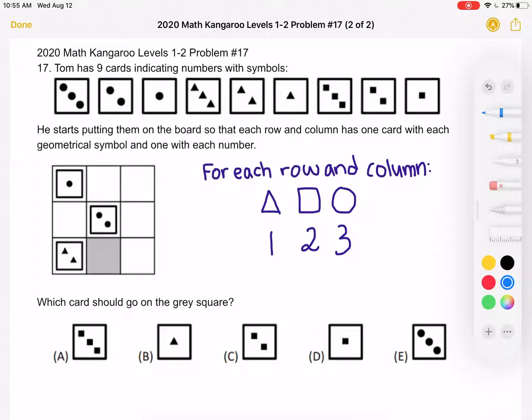To start, I've rewritten this sentence over here because it's very important we have a good understanding of what we're trying to do. From the problem, we know that Tom has nine cards with numbers and symbols, and that he starts putting them on the board so that each row and column has one card with each geometrical symbol.